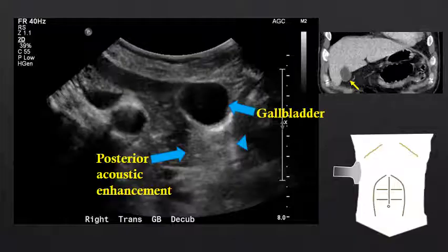The sound waves can pass through the simple fluid of the gallbladder without much attenuation or reflection, and therefore, higher-amplitude sound waves reach the soft tissues deep to the gallbladder. That allows for greater transmission of signal back to the probe, making the soft tissue deep to the gallbladder appear brighter than the adjacent soft tissue, which had sound waves that had to travel through soft tissue the entire time.